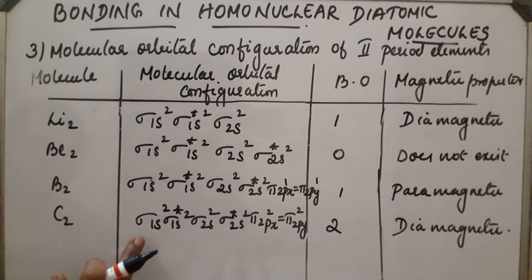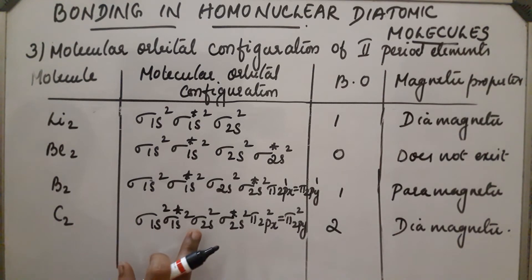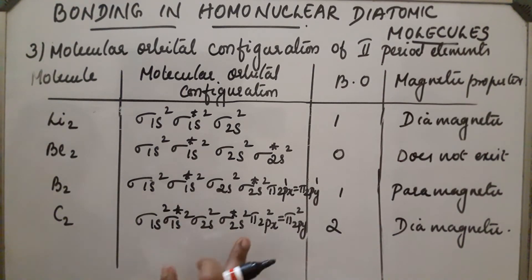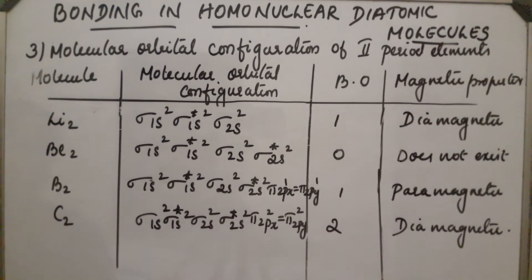Next is C₂, with the same energy order. Its configuration is sigma 1s², sigma star 1s², sigma 2s², sigma star 2s², pi 2px and pi 2py with two electrons each. The bond order is 2. It contains no unpaired electrons, so it is diamagnetic.